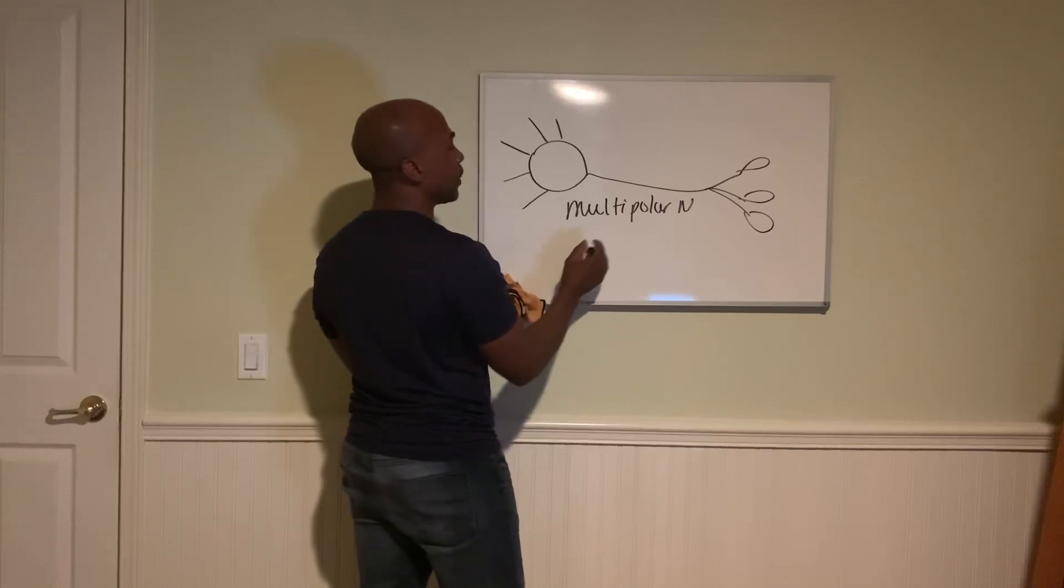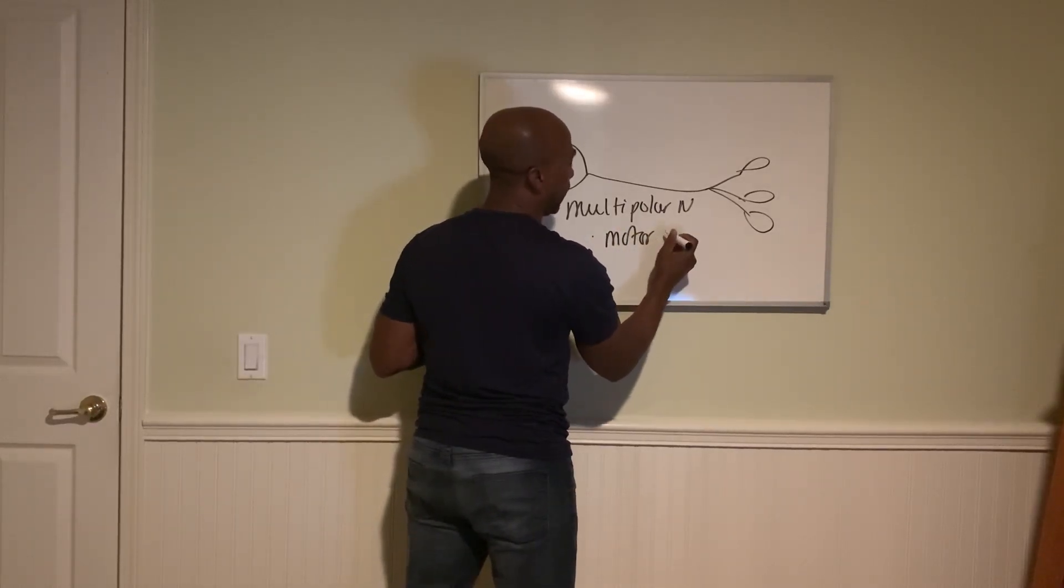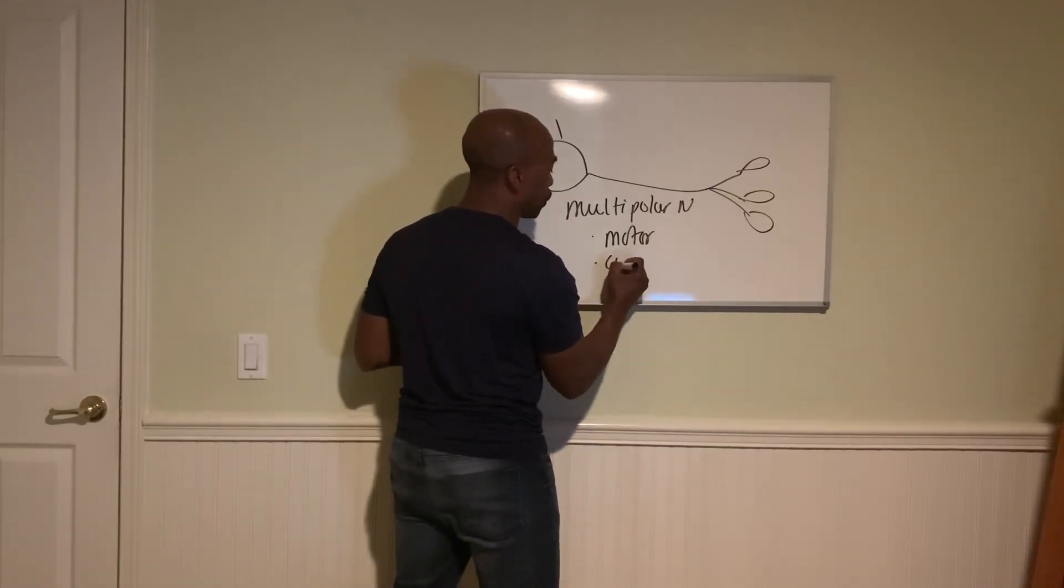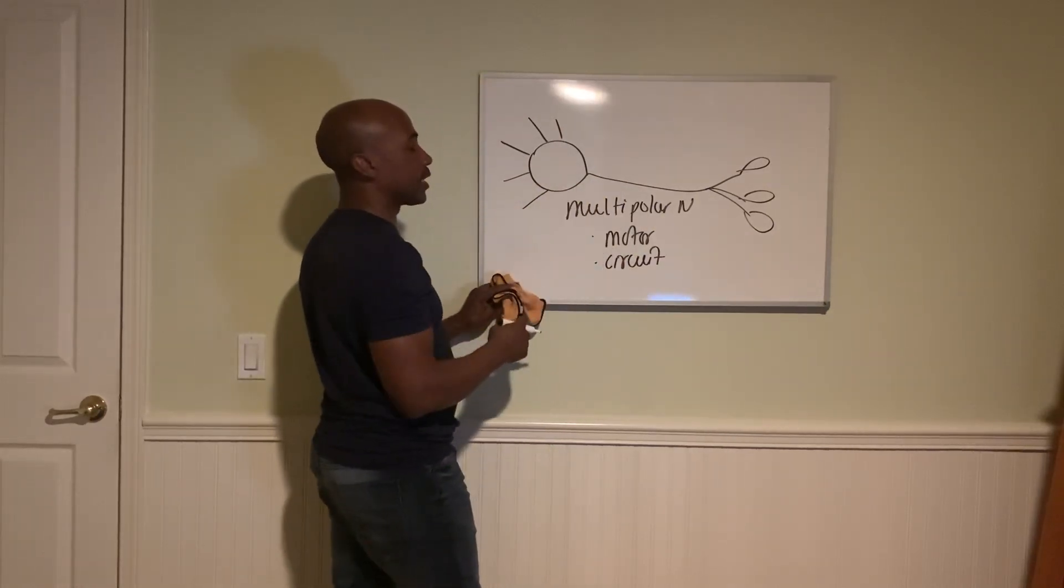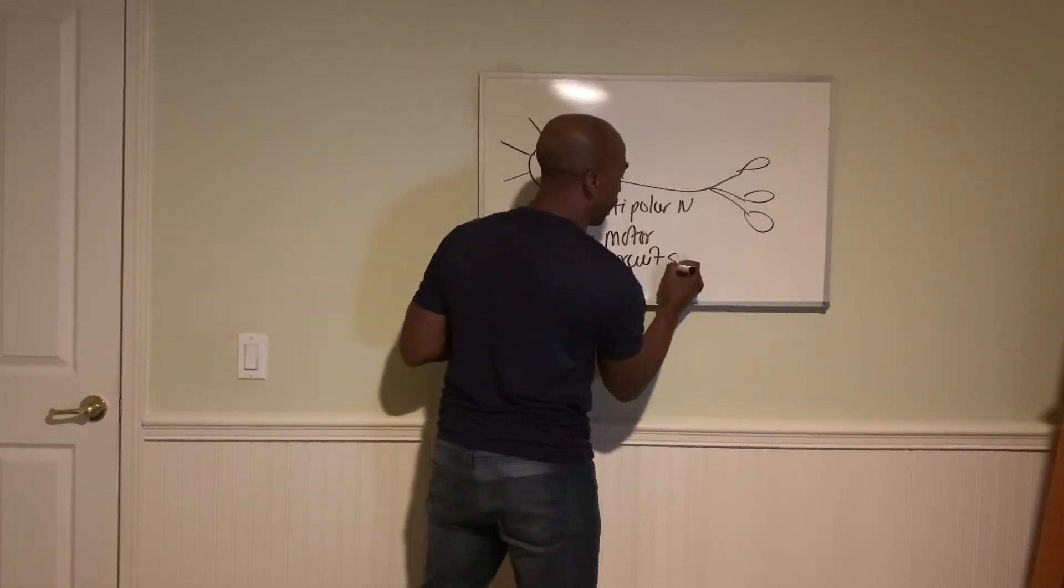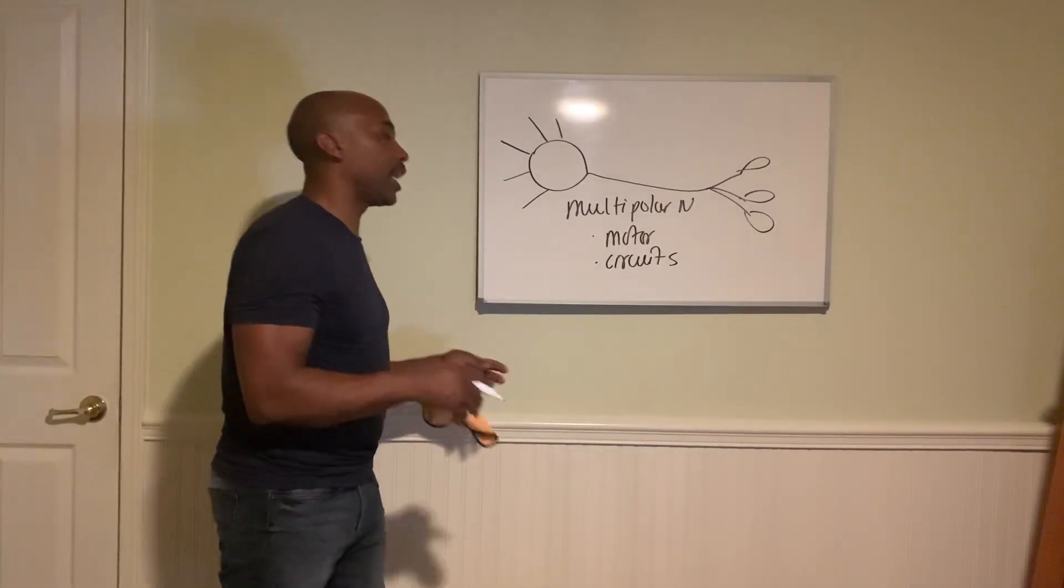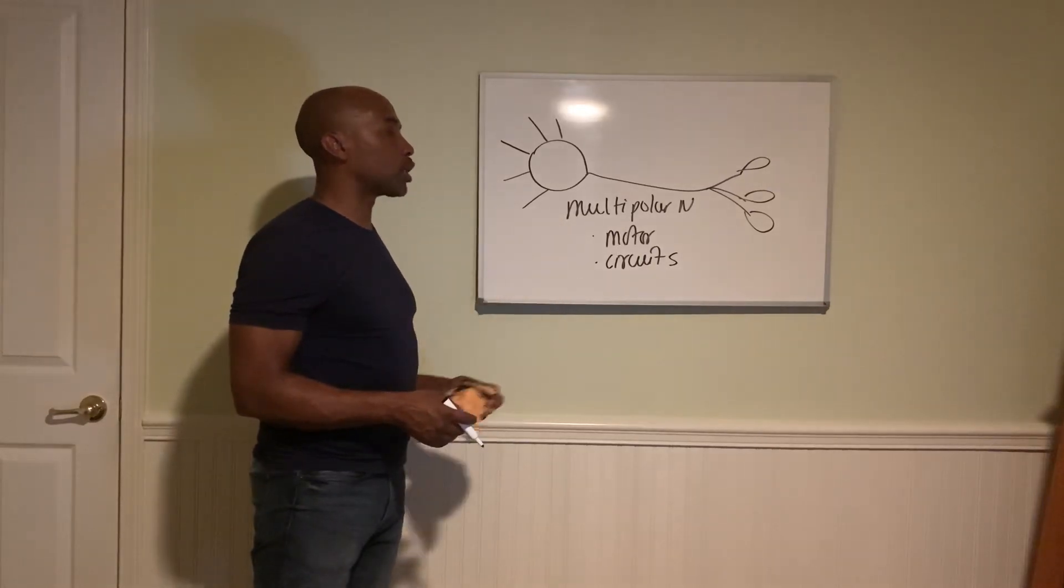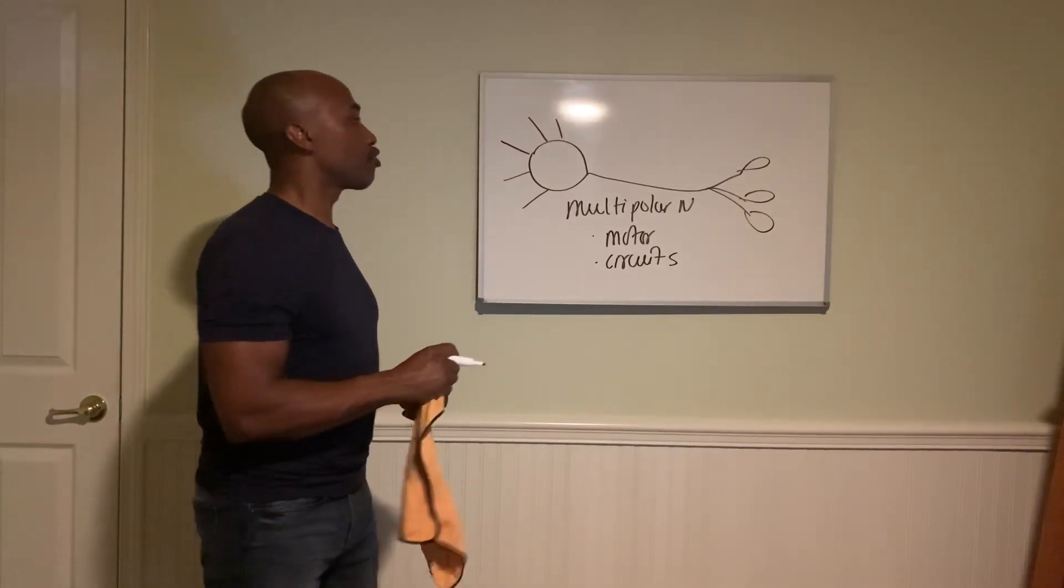And these neurons are typically used for motor activities, meaning their job is to control your muscles. They're also used as your circuit neurons. These are neurons that stay within the nervous system and form circuits for you—circuits that may create your personality, your memory, your judgment. Those are all formed by your multipolar neurons.